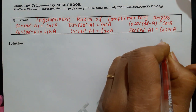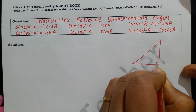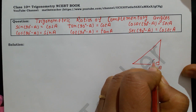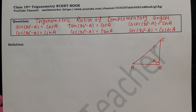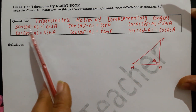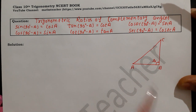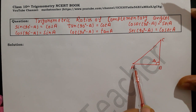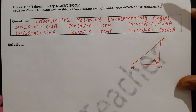To write the Trigonometric Ratio of Complementary Angles, first we make a right triangle of 90 degrees. Angle B is 90 degrees — angle B is a right angle. Angle A and angle C are acute angles. Angle A and angle C have a sum less than 90 degrees, so we call them acute angles.